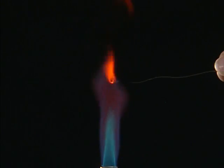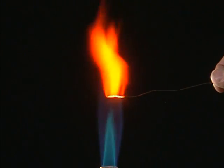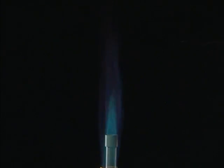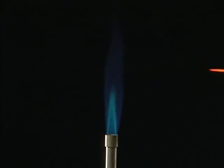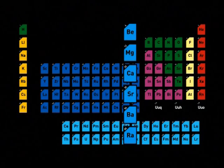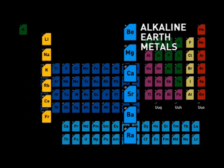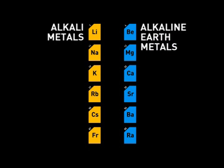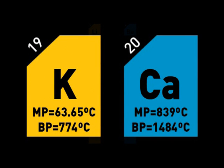Salts of the alkaline earth metals also emit strongly when heated in a flame and are commonly used in fireworks displays. All of the alkaline earth metals are harder than the corresponding alkali metals, which also makes them melt and boil at much higher temperatures than the alkali metals.